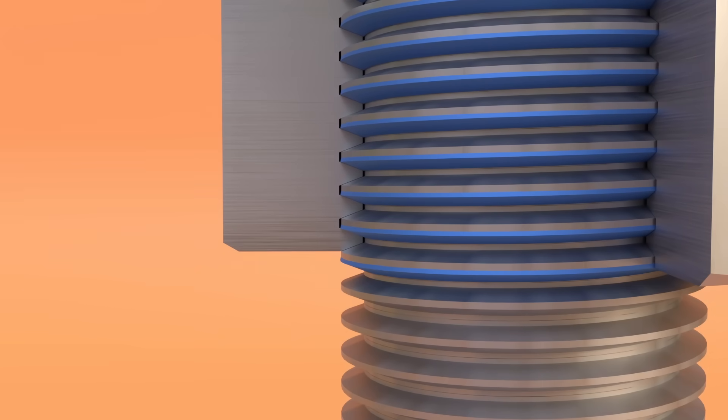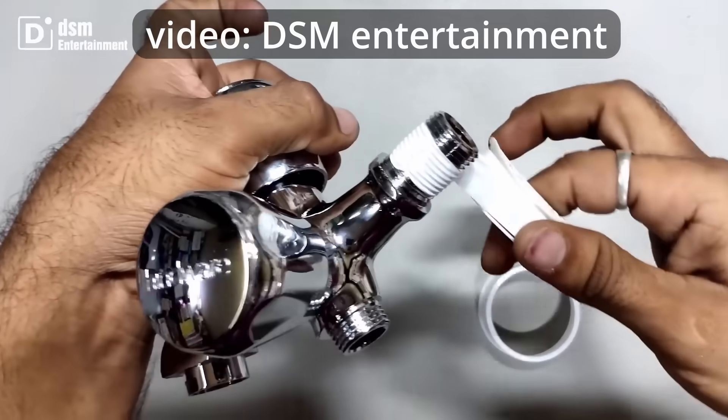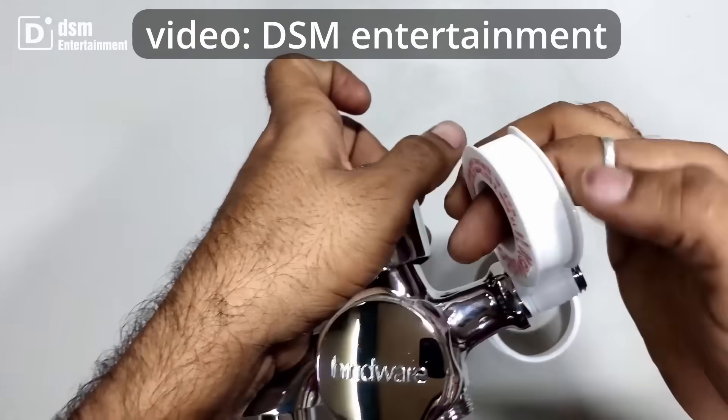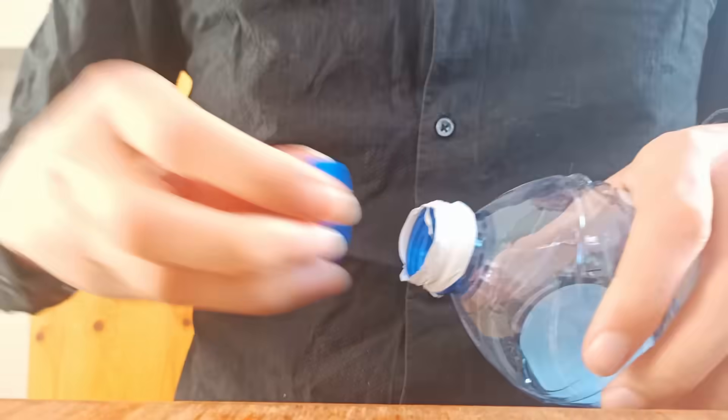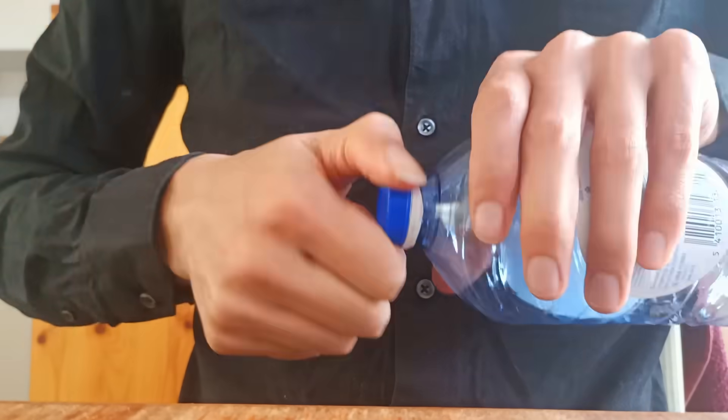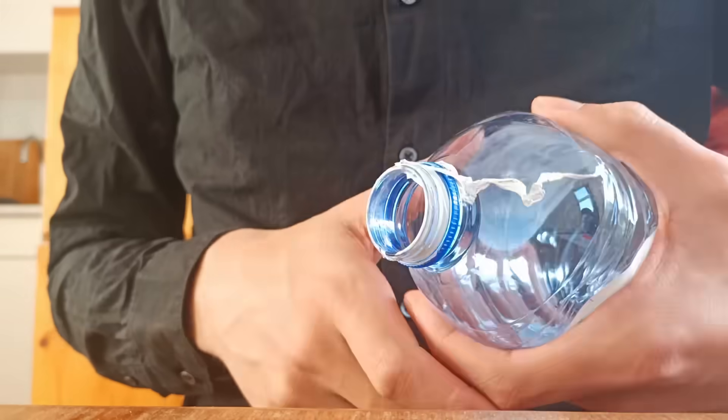So even on threads that are continuous, that are meant to seal, you need to use something like Teflon tape to fill the gap. This is obviously not great for bottles and jars that need to be opened and closed many times.